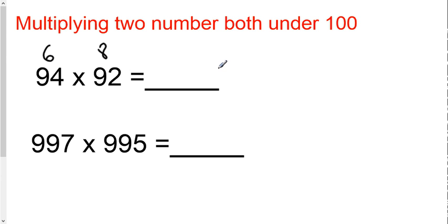You multiply those two numbers. 6 times 8, 48. The last two digits of your answer is 48.